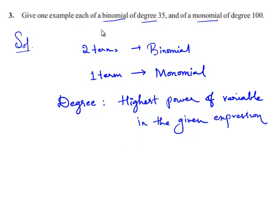So we are asked to find a binomial of degree 35. Binomial means it must consist of two terms and the variable must have degree 35. I can write it as 2x^35 - 1. In this expression, the variable is x and it has the power of 35.